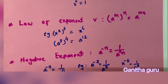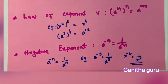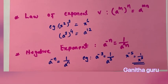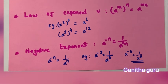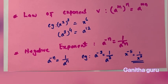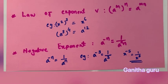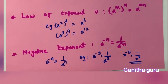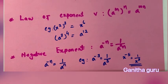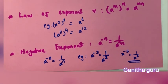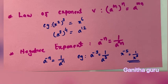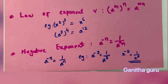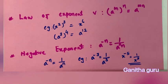Power of powers: just multiply the powers. Example: x raised to 2, whole raised to 3, gives x raised to 6. Another example: a raised to 3, whole raised to 4, equals a raised to 12, because 3 into 4 is 12.